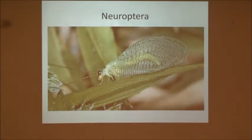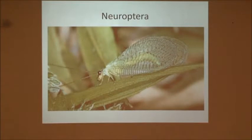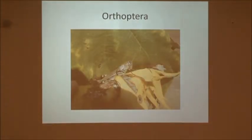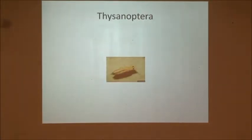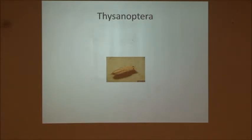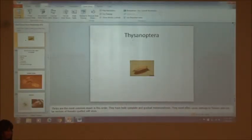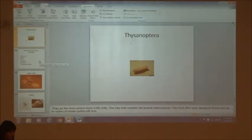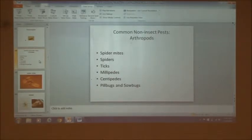Lepidoptera — this is where we get our butterflies and moths. Neuroptera — that's not an azalea lace bug but you may know what it is. Lacewings and thrips are also in this category. Orthoptera — grasshoppers. Thysanoptera — that little guy is a thrip, and thrips have both complete and gradual metamorphosis.